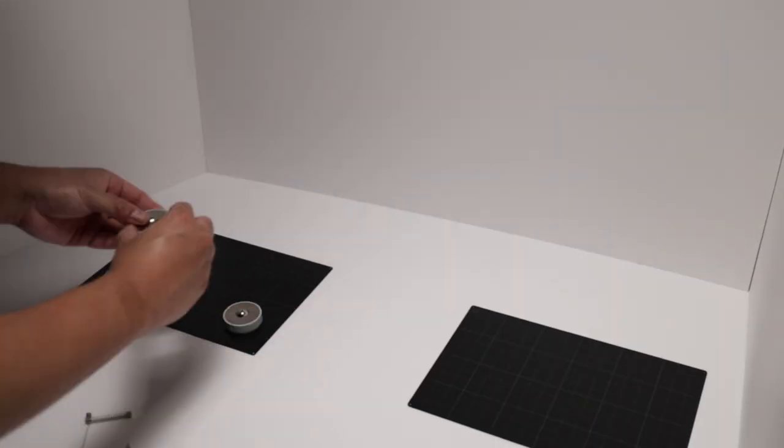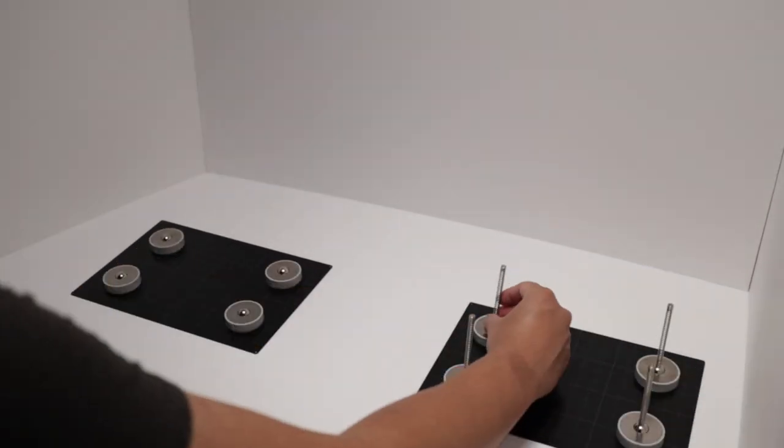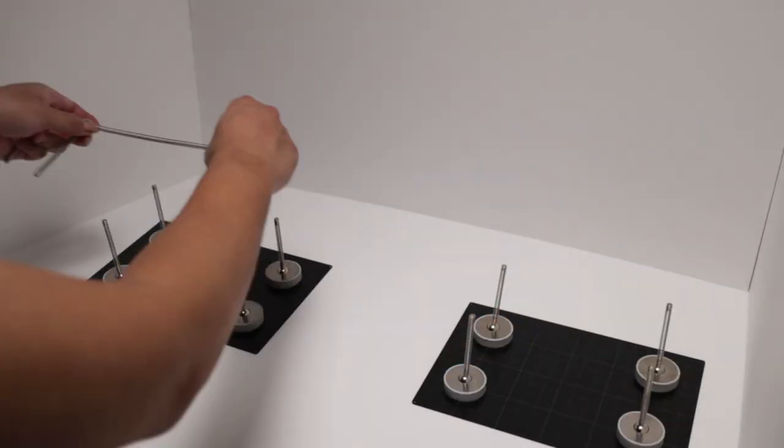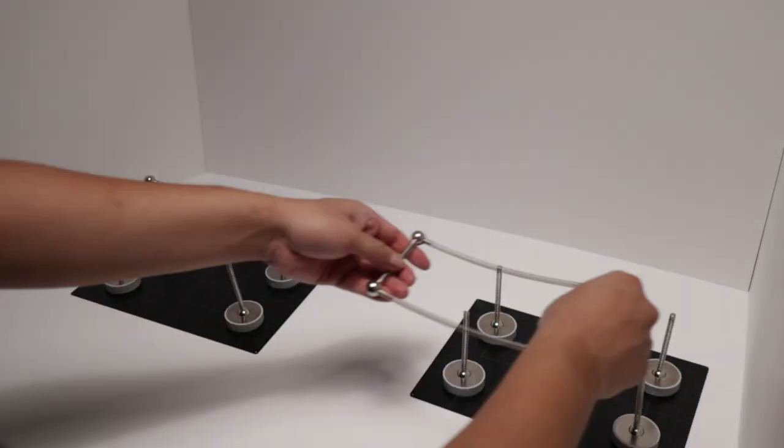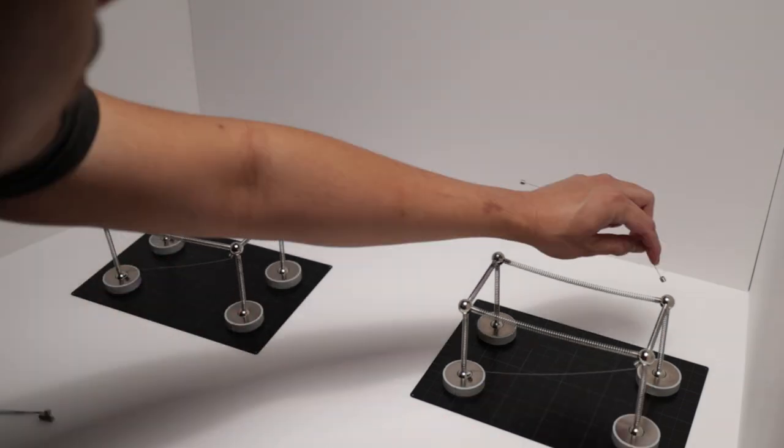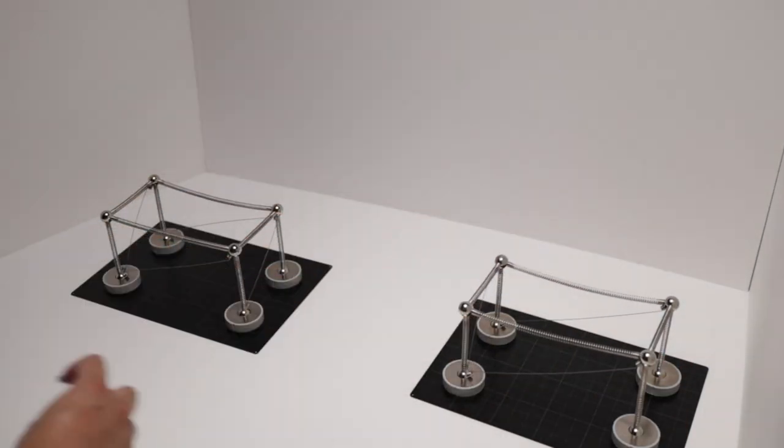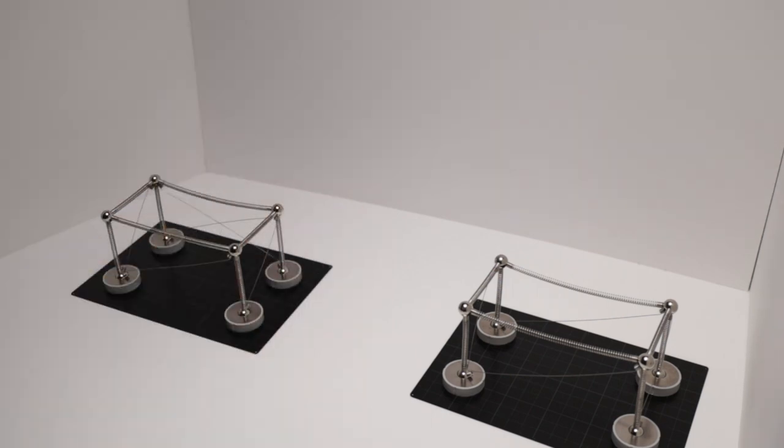And this is MOLA kit number three. This one, what's special about this is that it has suspension cables or tension only element cables that you can do a lot of cool stuff with. It also comes with column stiffeners for long columns so you don't have to brace them.